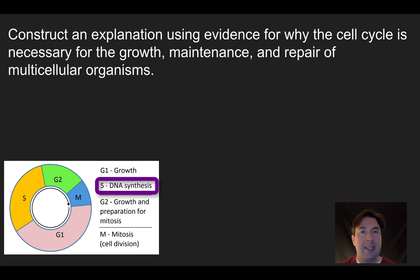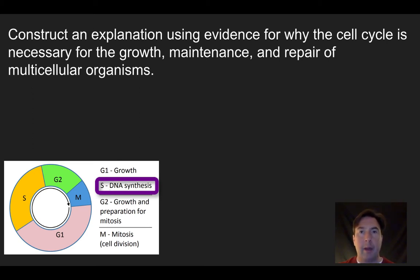The second phase is S phase. During S phase we have DNA replication, or DNA synthesis. What that means is we're going to make a copy of all of the DNA in the cell, so we go from having a single copy of all the genes to two copies of all the genes. This will be important later when we look at the M phase in more detail.